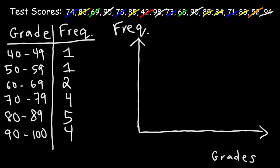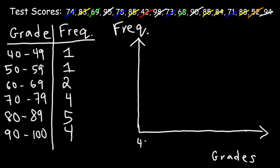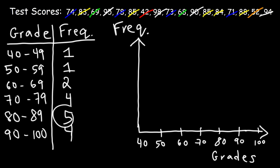We're going to plot these numbers on the x-axis. The lowest number is 40, and then 50, 60, 70, 80, 90, and the highest is 100. For the y-values, the highest frequency is 5, so we go up by 1: 1, 2, 3, 4, and 5.